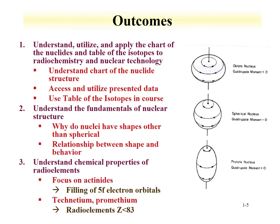The course has seven outcomes. At the end of the quarter, the student should have expertise, experience, and knowledge in a few different topics related to radiochemistry. The first outcome is to understand, utilize, and apply the chart of the nuclides and the table of the isotopes to radiochemistry and nuclear technology — primarily, understanding how to obtain and utilize the data presented in those documents.